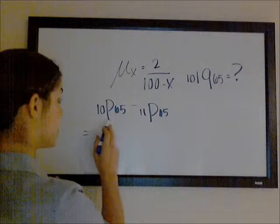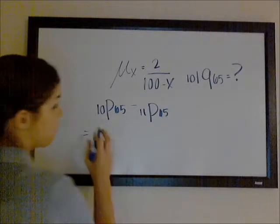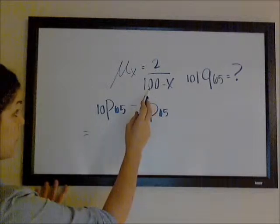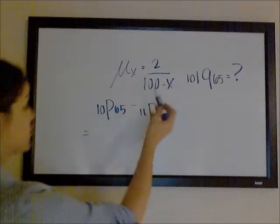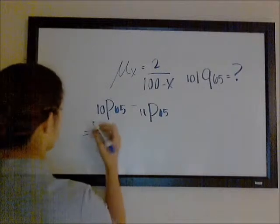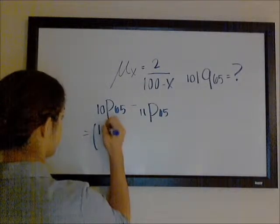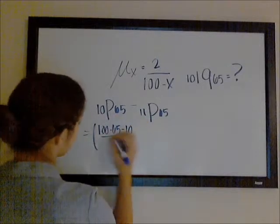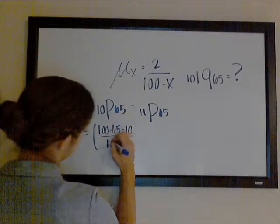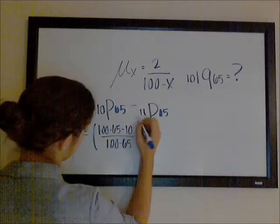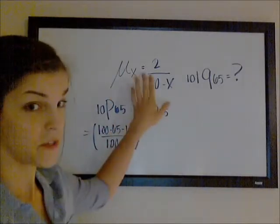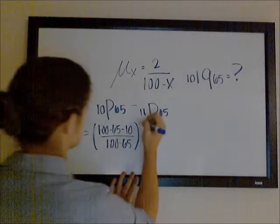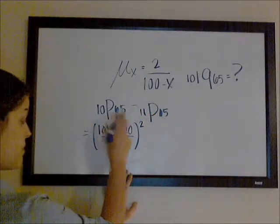Okay, so 10p65, if it was uniformly distributed, or if it had a de Moivre distribution with a limiting age of 100, it would be 100 minus 65 minus 10 over 100 minus 65. But since we've multiplied the force of mortality by a constant, we're going to raise the survival probability to that constant. So that's our 10p65.